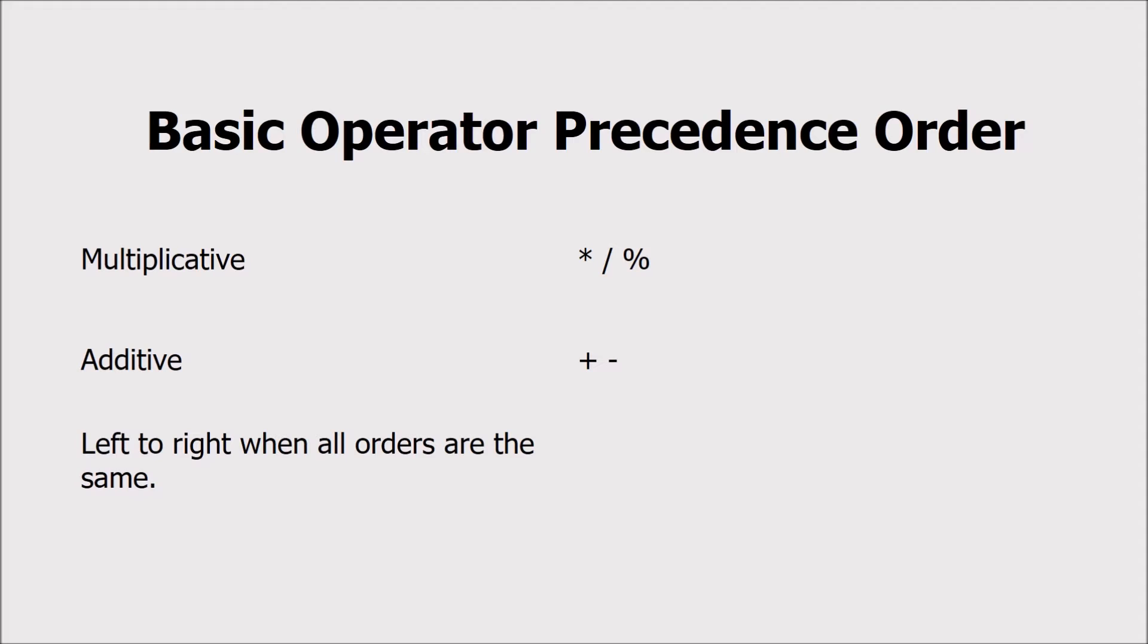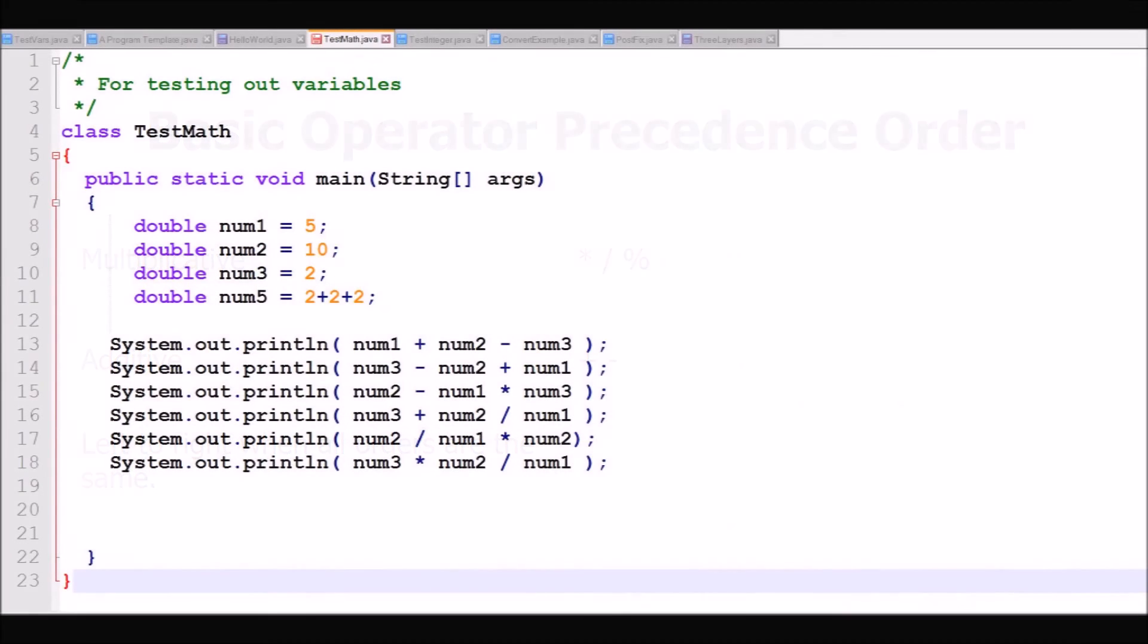The order of precedence is multiplication, division, and modulus first, then addition and subtraction second. In the case of all operators present being equal in precedence, then Java will begin on the left hand side and calculate towards the right. Let's take a look at the test Java program. This program does a simple math test.